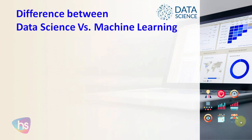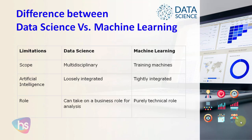Now, differences between data science versus machine learning. The main differences between the two terms cover scope, limitations, and role. Data science is multi-disciplinary whereas machine learning is focused on training machines. In terms of integration with artificial intelligence, data science is loosely integrated whereas machine learning is tightly integrated. The role of data science is primarily a business analysis role, whereas machine learning is purely a technical role.